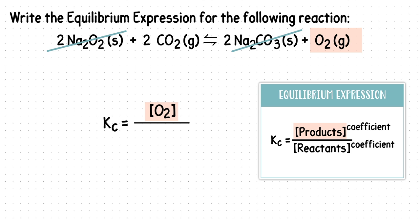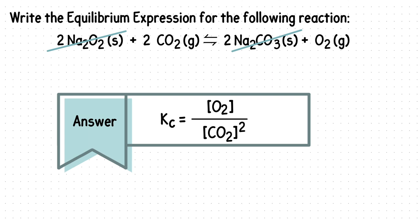Next, our reactant of CO2 goes on the bottom and in brackets. Since there is a coefficient of 2 in front of CO2, we will account for this by placing the 2 as our exponent. This is the correct equilibrium expression for this reaction.